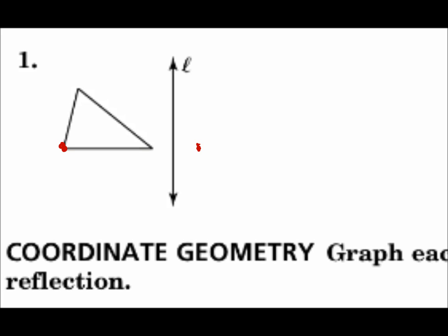This point is about that far away from the line of reflection. I will go that same distance on the other side and end up right about there. This point is that far away from the line of reflection. Move it the same distance to the other side and you end up right about there.